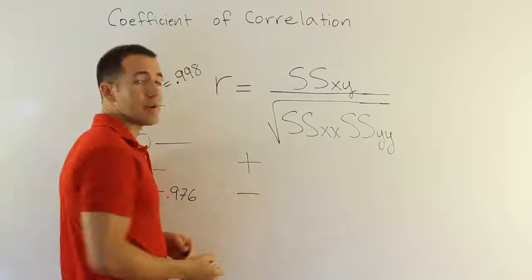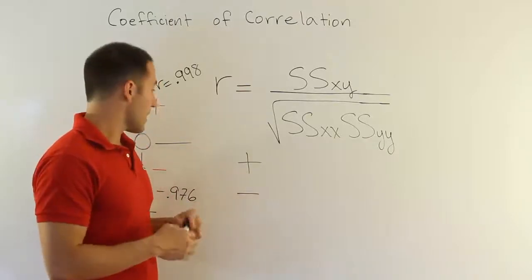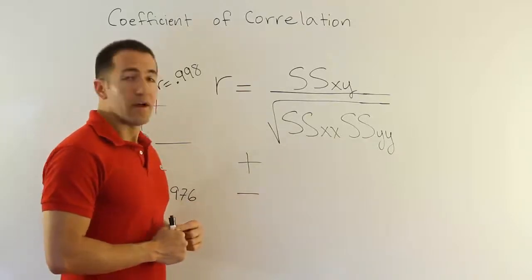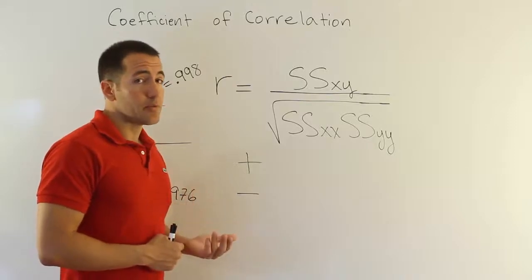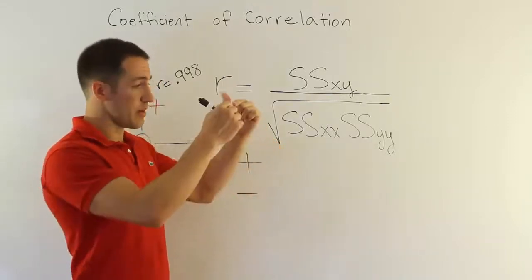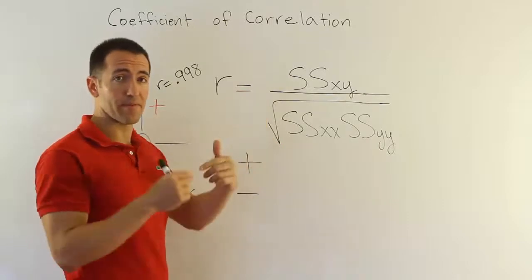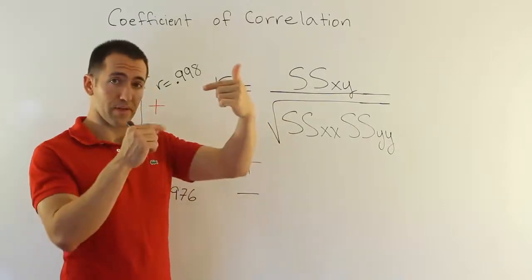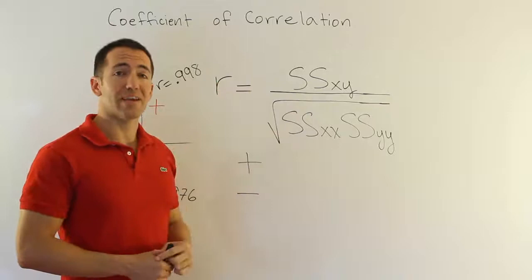A negative relationship means they move in opposite directions. So, for example, that might be something like the reliability of your automobile versus its age. As the car gets older, the reliability comes down. So we have a scenario where as one goes up, the other variables goes down. That's a negative relationship.